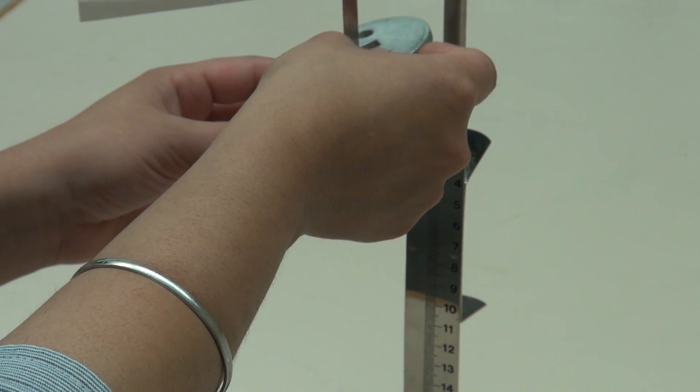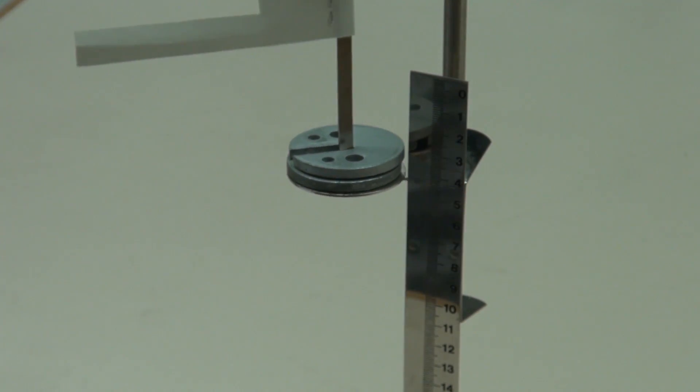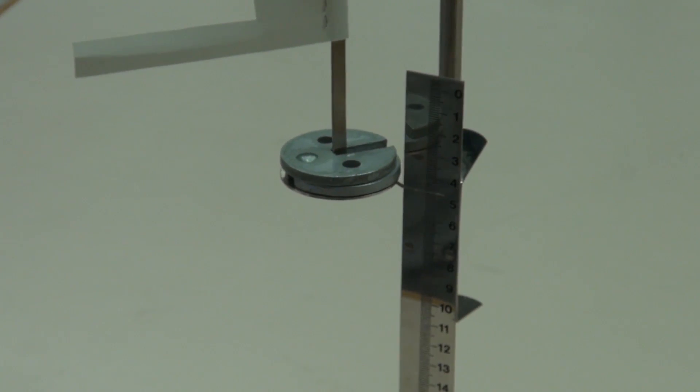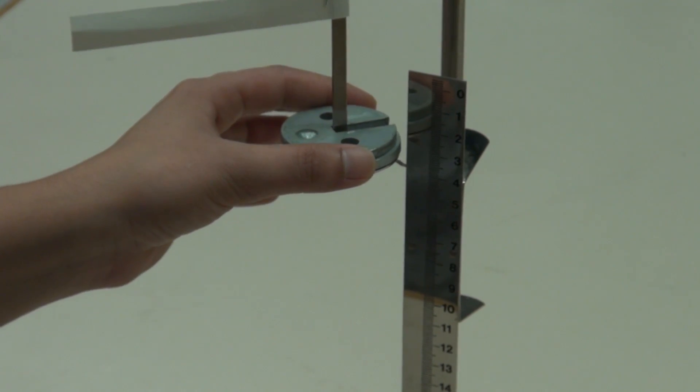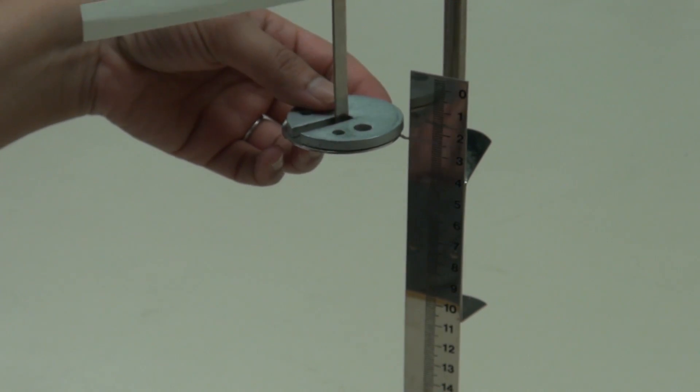In the actual experiment you will record pointer positions for masses of 100 gram to 350 gram in 50 gram increments. Carefully remove the masses one at a time and confirm that the pointer positions are the same as when the masses were added.